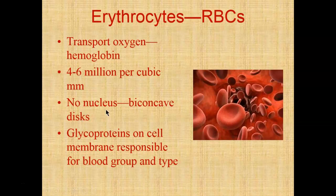In their mature form, erythrocytes have no nucleus because they've ejected it after making themselves into great big bags of hemoglobin, giving them their biconcave shape. In addition to carrying oxygen, there are glycoproteins and glycolipids embedded in the cell membrane. Some really important glycoproteins on the membranes of your erythrocytes determine your blood type and the blood group you belong to — the presence or absence of these glycoproteins determines your particular blood group.